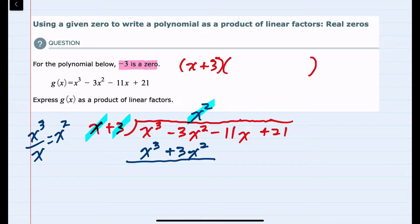And then I would want to subtract this, just as in long division. So that would be the same as changing each of these signs and adding. So the x³s cancel, and this adds to a negative 6x². Bring down the next term, minus 11x.